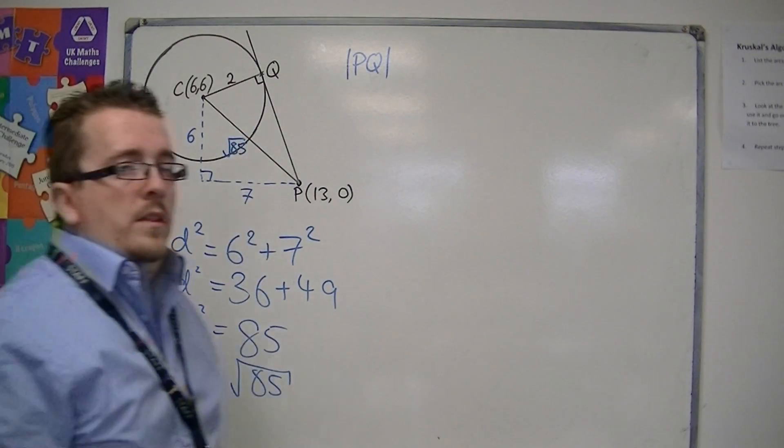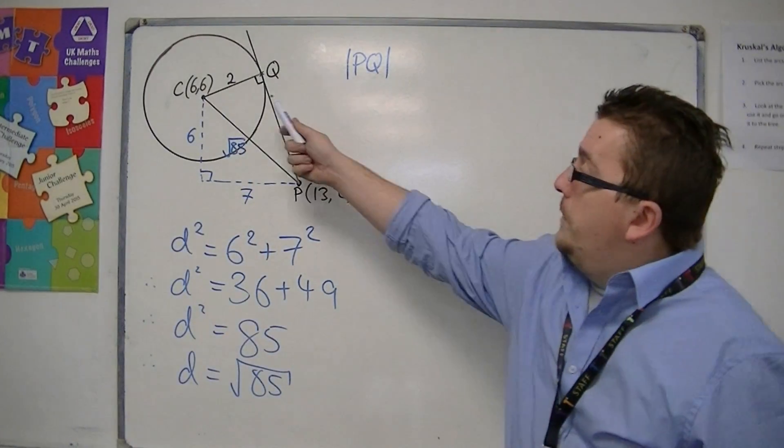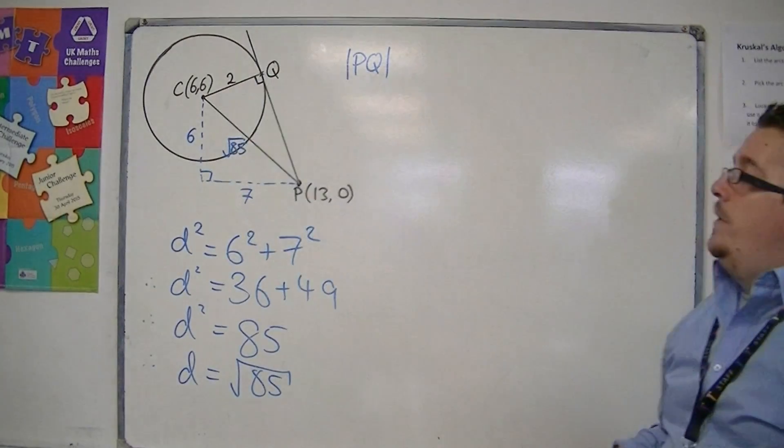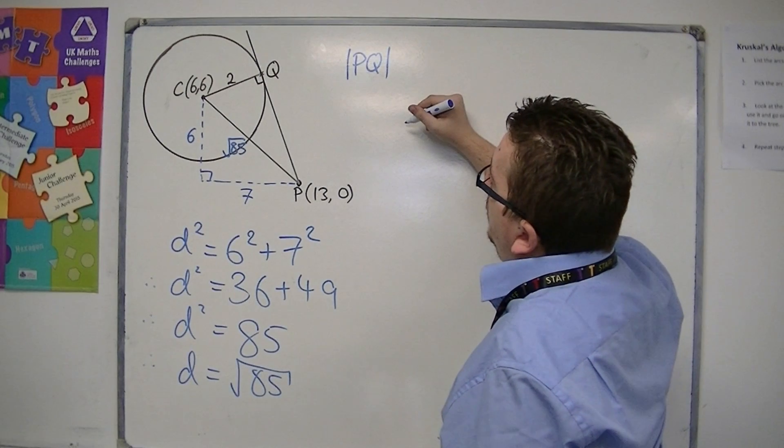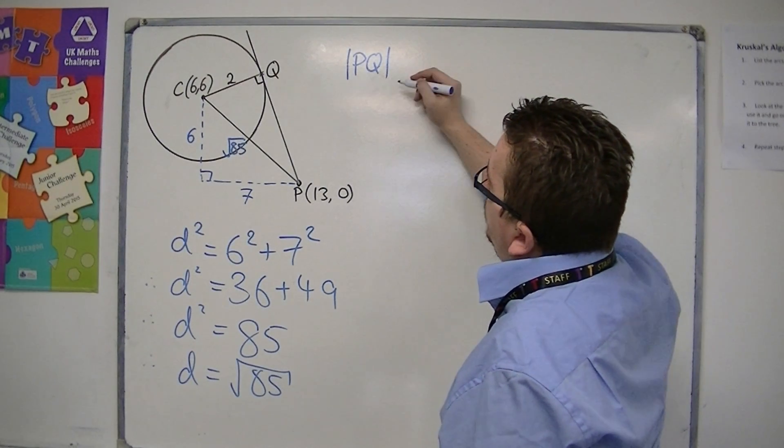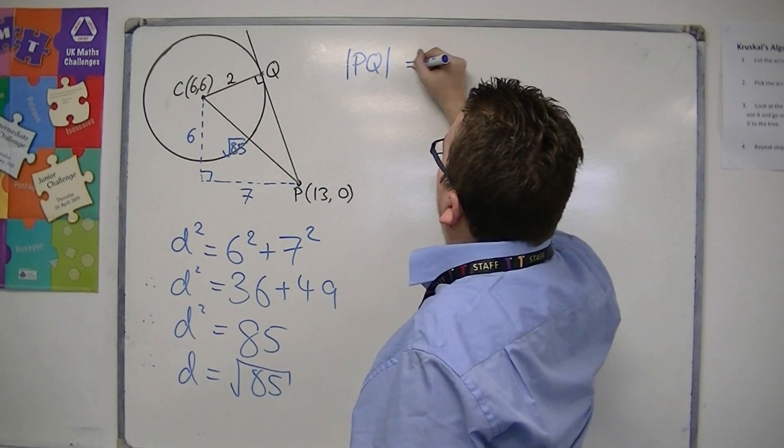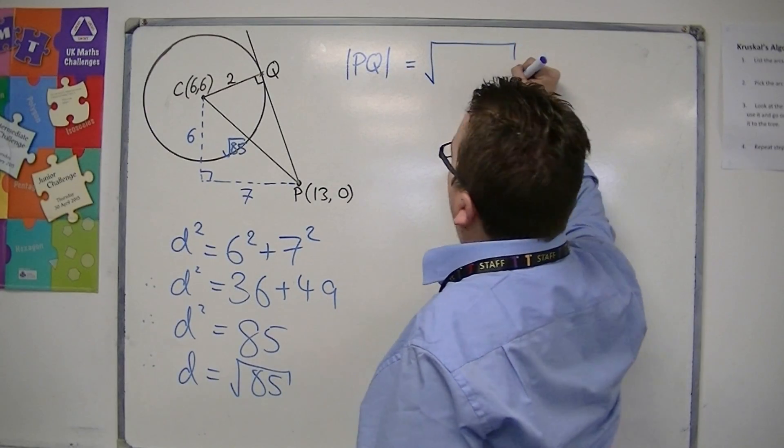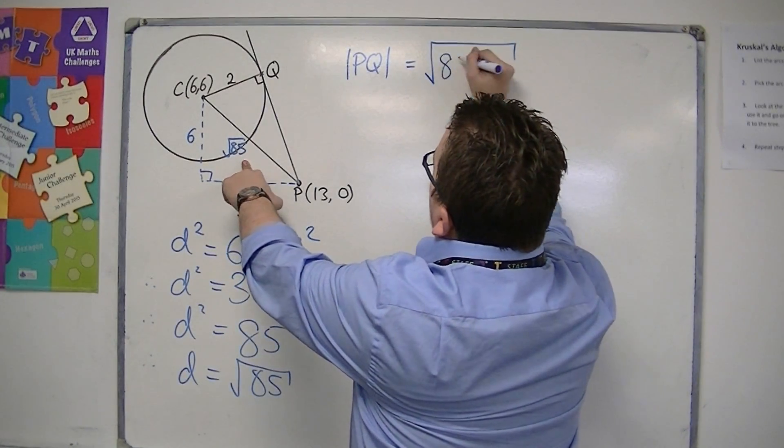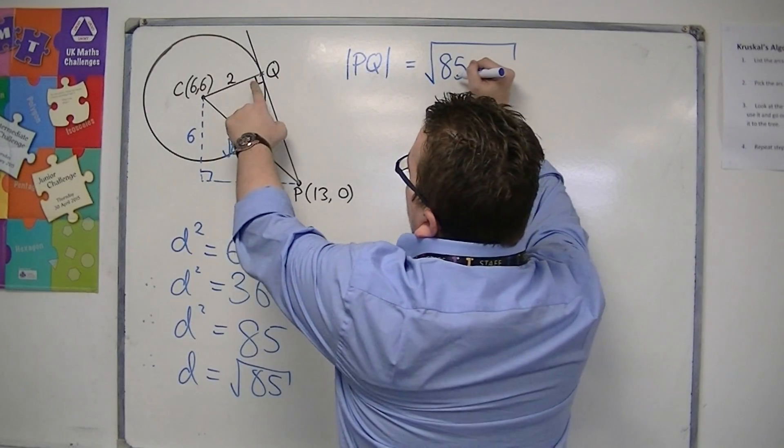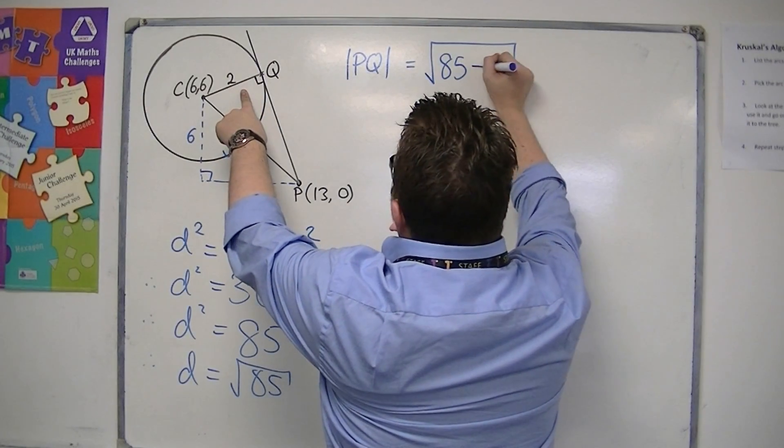then knowing the other side of the triangle is 2, we can use Pythagoras to work out this length. So if we say that the length of PQ equals the square root of (√85)² minus 2², which is √(85 - 4),